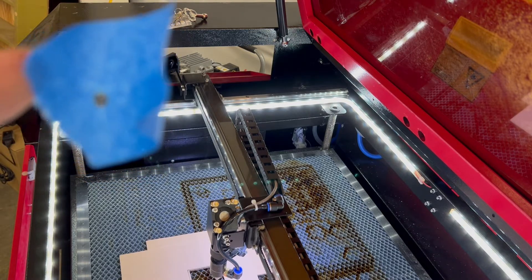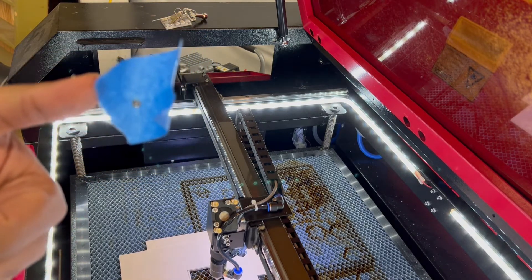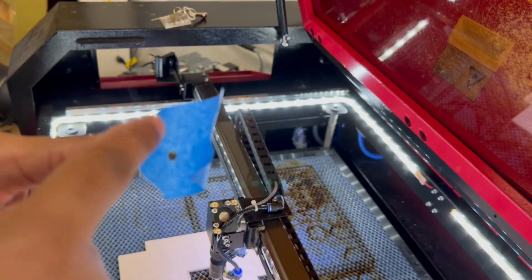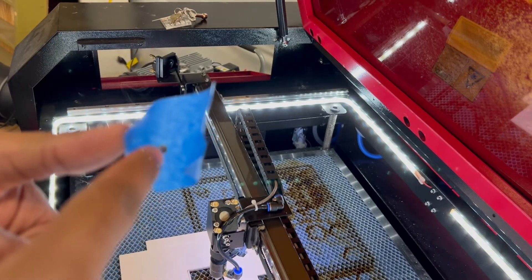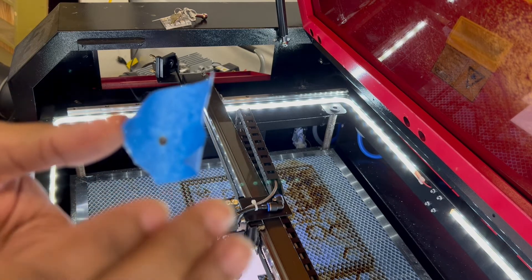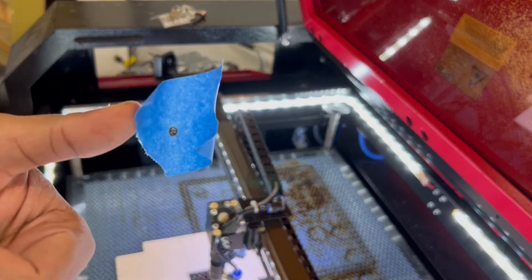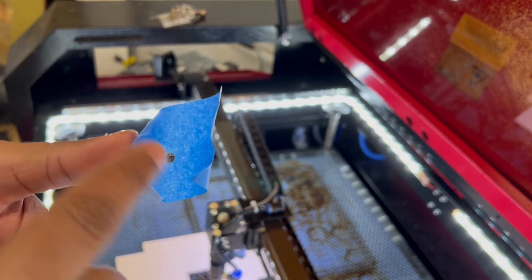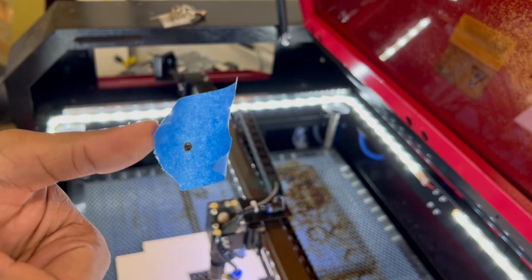So as we can see, I have a hole where my circle would be, but I only have one hole. I don't have one here, one there, so that means that the alignment from front to back is correct. Now I'll show you what would need to be adjusted if hypothetically those dots weren't aligned on the back mirror.